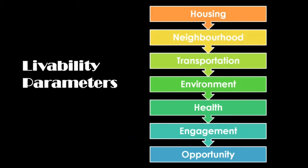Livability parameters. These are the seven essential parameters: housing, neighborhood, transportation, environment, health, engagement and opportunity.